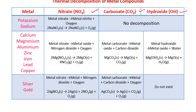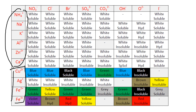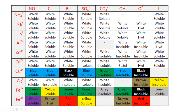This table shows the colors of various compounds. Group 1, 2, and 3 metal compounds are all white. Transition metal compounds are colored — for example, copper nitrate is blue, copper chloride is blue, and copper bromide is black. So whenever a transition element forms a compound, it is colored; all other metals form white solids.